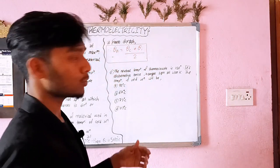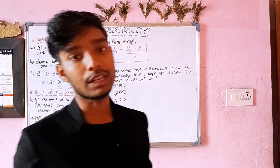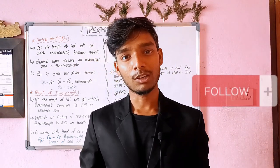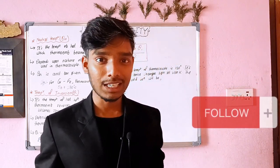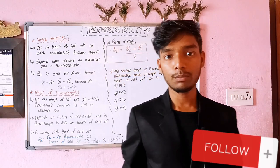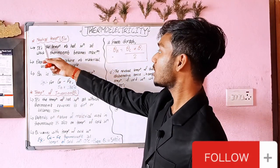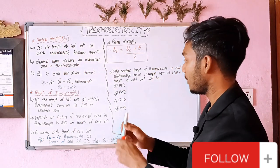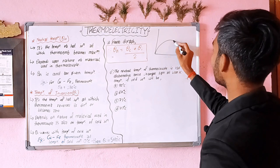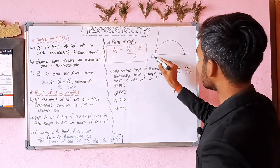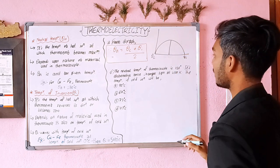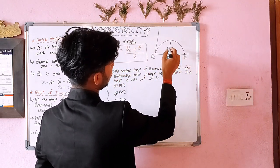So continuing from the parabolic graph — we have a parabolic graph with theta on one axis. When we go to theta_c and theta_i, we look at the thermo-EMF. The E_max occurs above the neutral temperature θ_n. Drawing perpendicular lines on the graph, we get the neutral temperature.